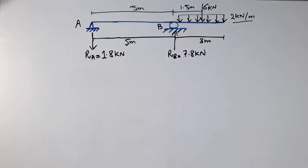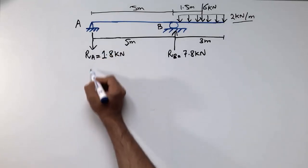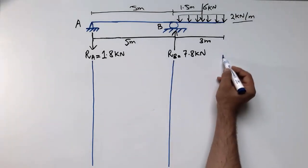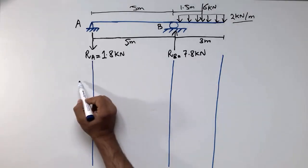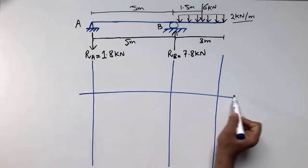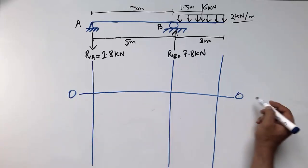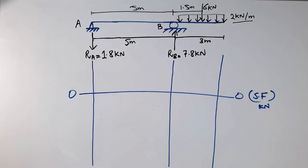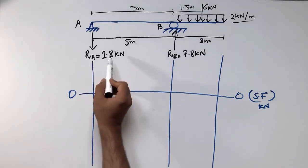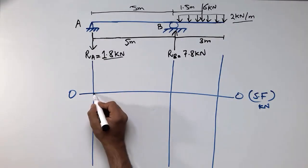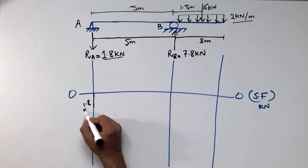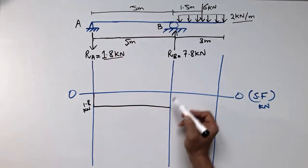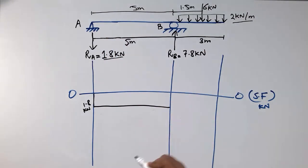Now to draw the shear force and bending moment diagram, I will first draw the reference line at the critical points. The shear force reference line represents zero shear force, with units in kN. Since RA acts downward with magnitude 1.8 kN, the shear force starts at −1.8 kN. There is no load on the 5 m span, so I draw a straight horizontal line across that portion. Then RB = 7.8 kN acts upward.